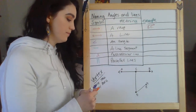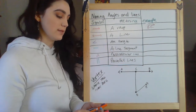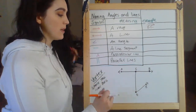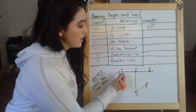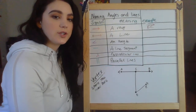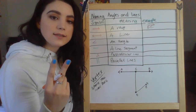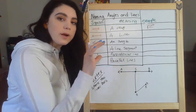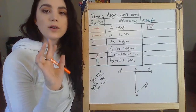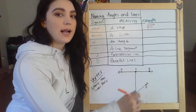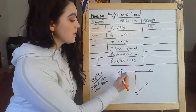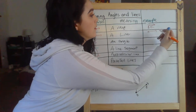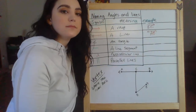Moving on to a line — lines go on forever in both directions. Here's my arrow on this side, here's my arrow on that side. It goes on forever in both directions. We only need two letters for lines, so I'm not going to include this random C in the middle. The line is just where it starts on one end and where it goes on the other end. There are still going to be points on those lines so that we can name them. So this is going to be called line AB.